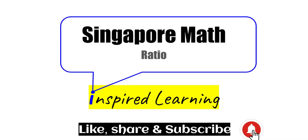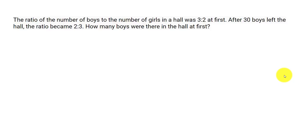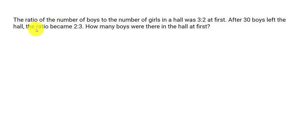Good morning. Today we are going to see a ratio-related problem, and we are first going to solve it using the model method, followed by the algebraic method. Let's go with the model method first. The question is: the ratio of the number of boys to the number of girls in a hall was 3 to 2 at first. After 30 boys left the hall, the ratio became 2 to 3. How many boys were there in the hall at first?